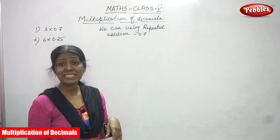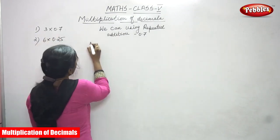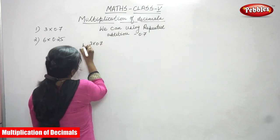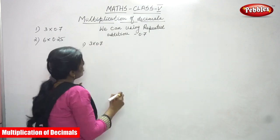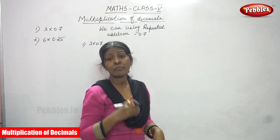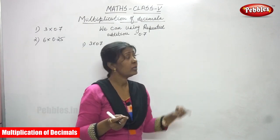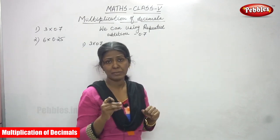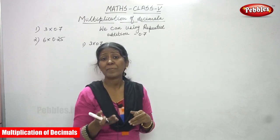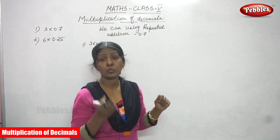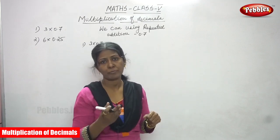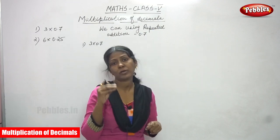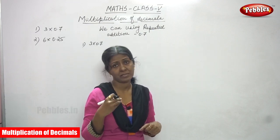So 3 into 0.7 — it is a multiplication. We can do one thing: we have to write 0.7, which is a decimal number, and make it a repeated addition. So three times you have to write the same number, and after that you add the numbers to get the answer.